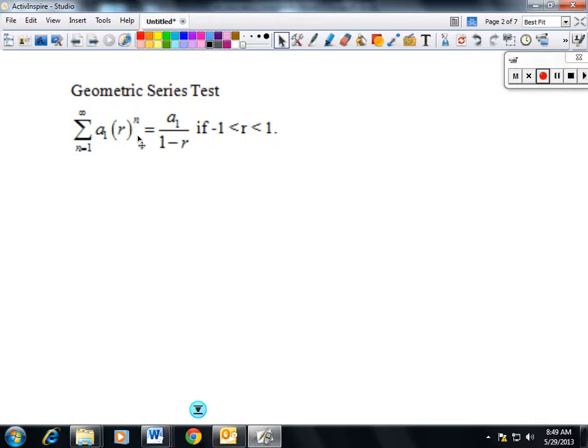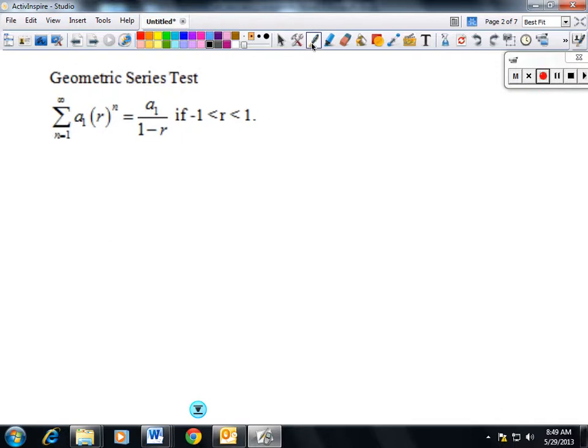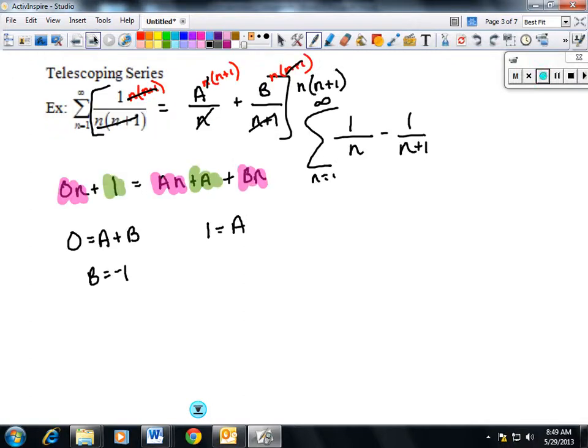Now we're going to talk about geometric series. A geometric series is one of the only two series that you can actually determine what it converges to. You can actually find the sum. Most series you either just say they converge or they diverge and you're done. But for telescoping series like the one we just did, you can actually say that it converges and it almost always converges to its first term because everything else falls apart.